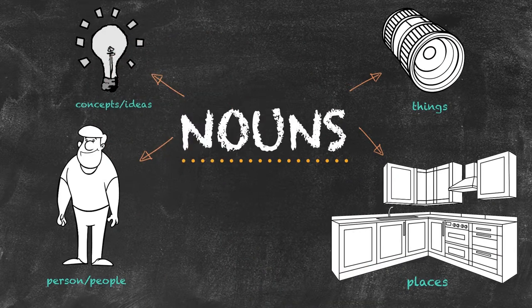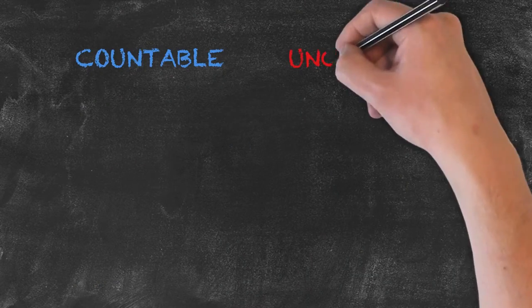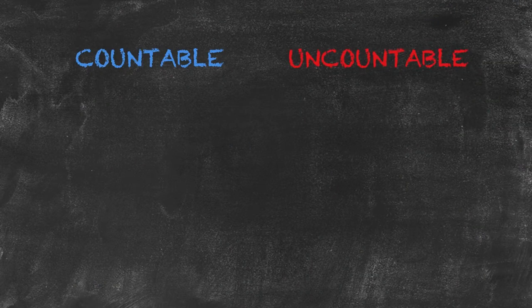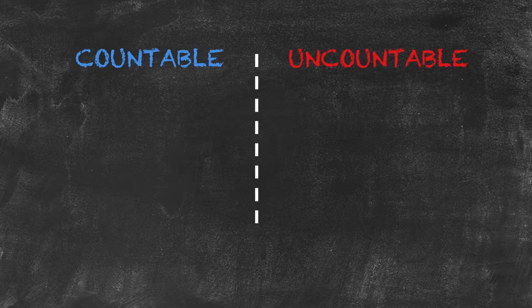These people, things, places and concepts fall into two basic subcategories. Those subcategories are countable and uncountable. As their name suggests, the differentiation here is whether or not we can count our nouns or if we cannot count them.